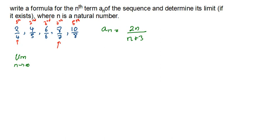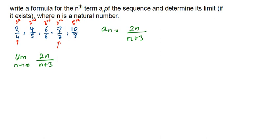We have our 2n over n plus 3. If I put infinity in the numerator and infinity in the denominator, I get infinity over infinity. You can handle this in two ways. You can use L'Hôpital's rule: differentiate the numerator to get 2, differentiate the denominator to get 1, giving us 2. So let's also try another method to see if it works out.